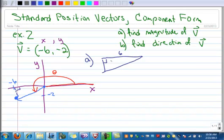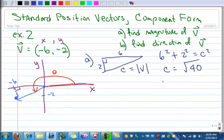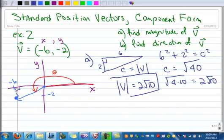This leg is 6. This leg is 2, and I want to calculate the hypotenuse, which is the magnitude of v. So using the Pythagorean theorem, we know that 6 squared plus 2 squared equals c squared. You already know how to do the math there. So I'll just say that's the square root of 40, and then we can reduce that. You know that 40 is 4 times 10, so that can be 2 times the square root of 10. So our magnitude is 2 times the square root of 10. So there's part A.